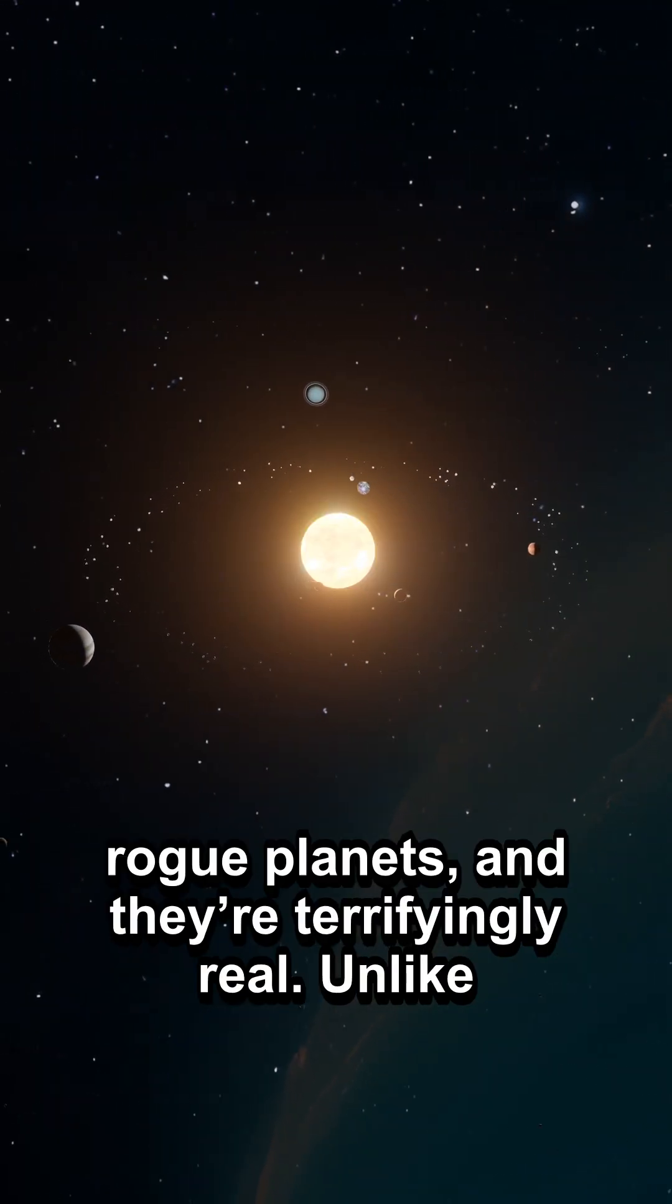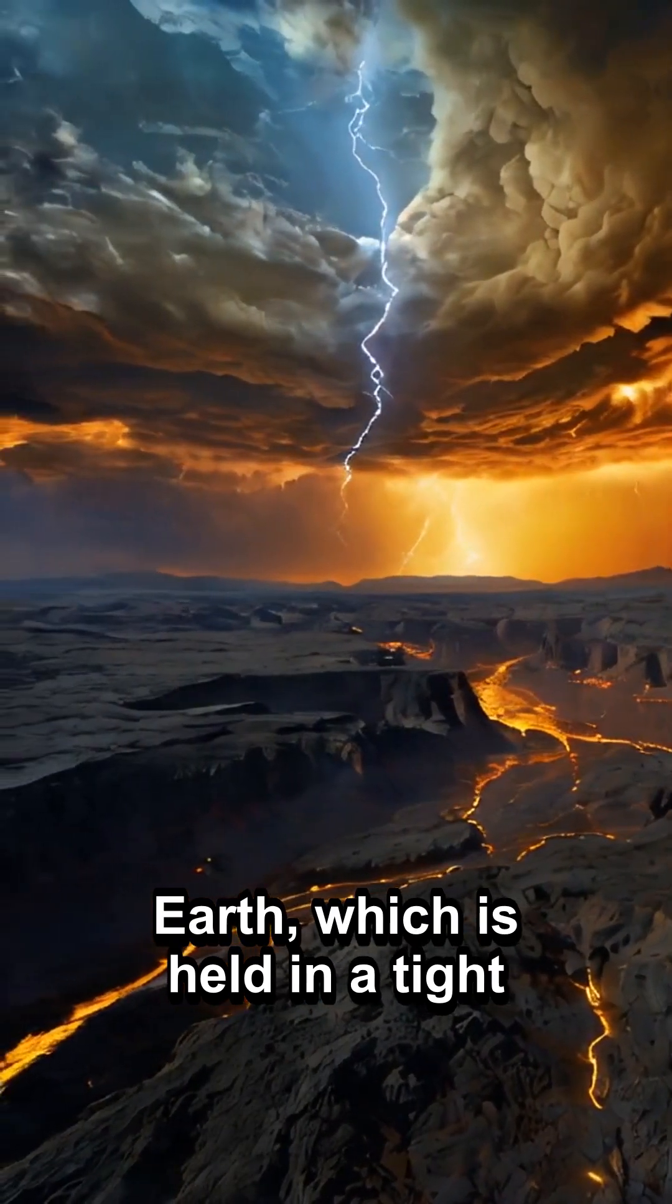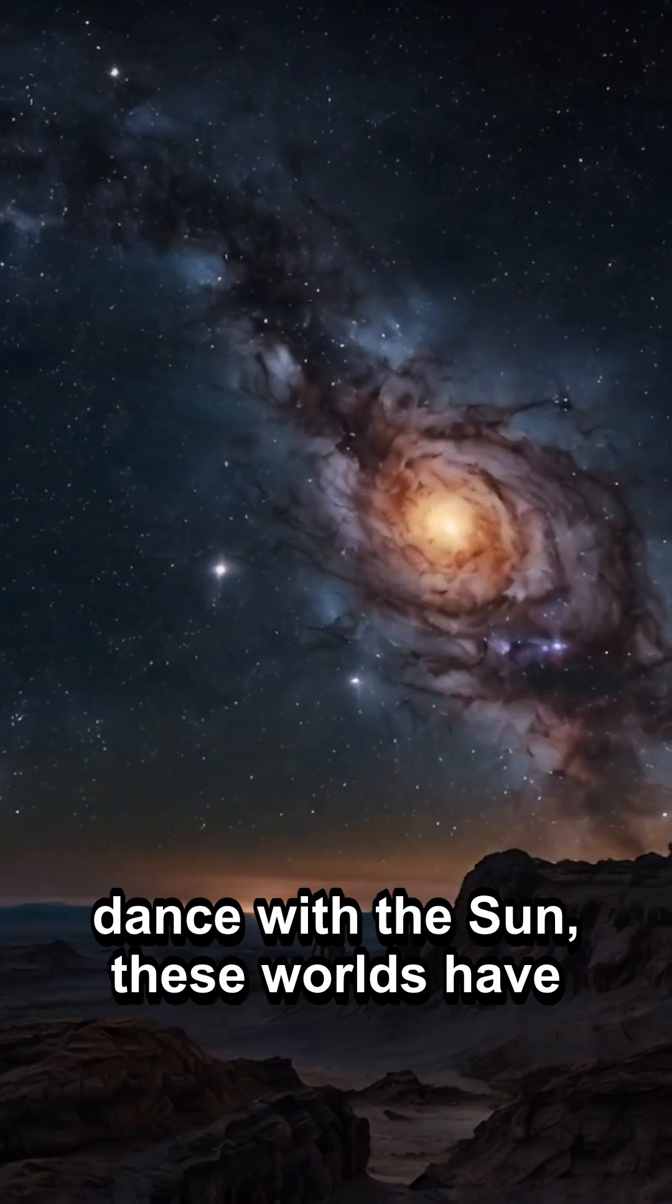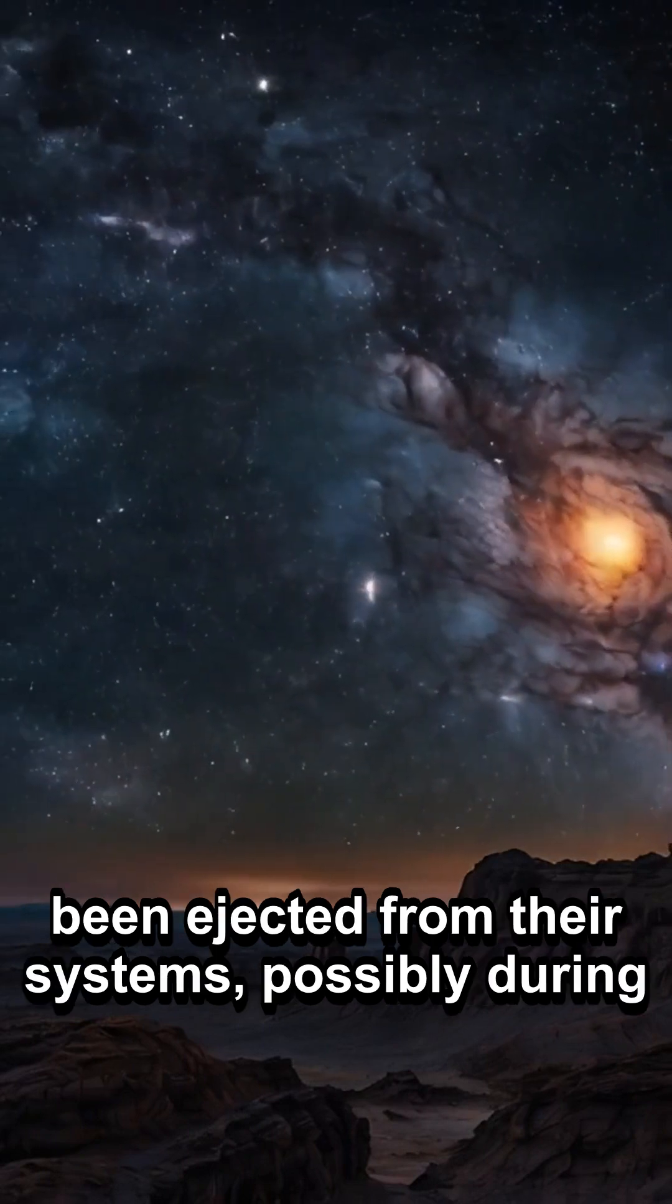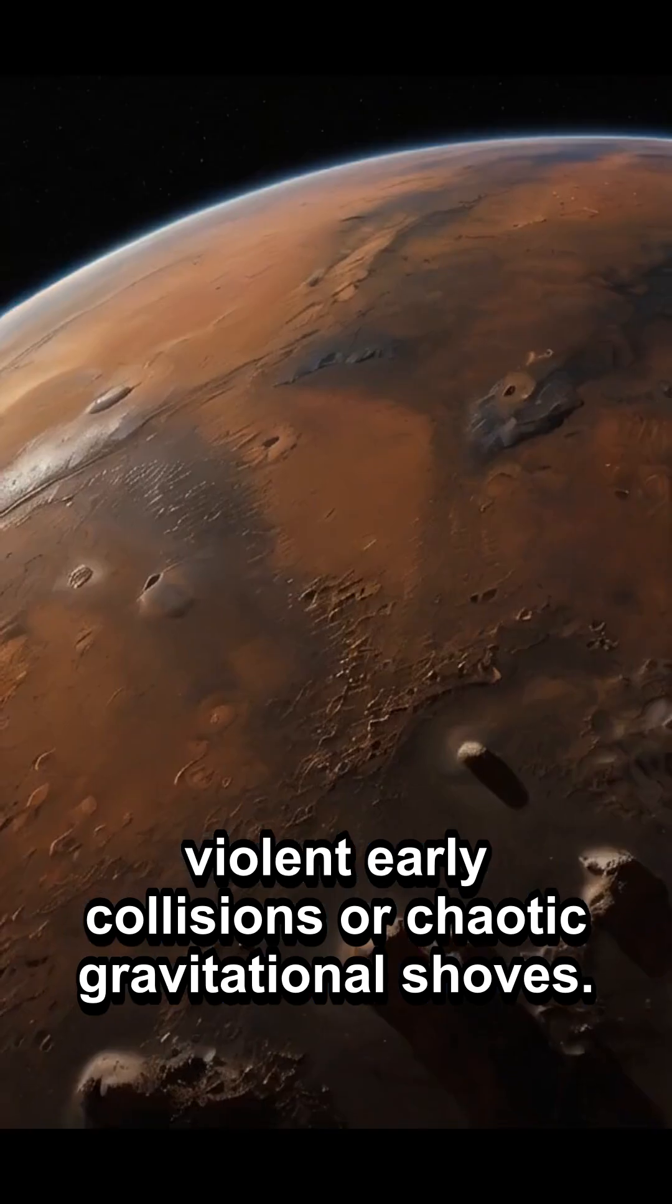These are rogue planets, and they're terrifyingly real. Unlike Earth, which is held in a tight dance with the Sun, these worlds have been ejected from their systems, possibly during violent early collisions or chaotic gravitational shoves.